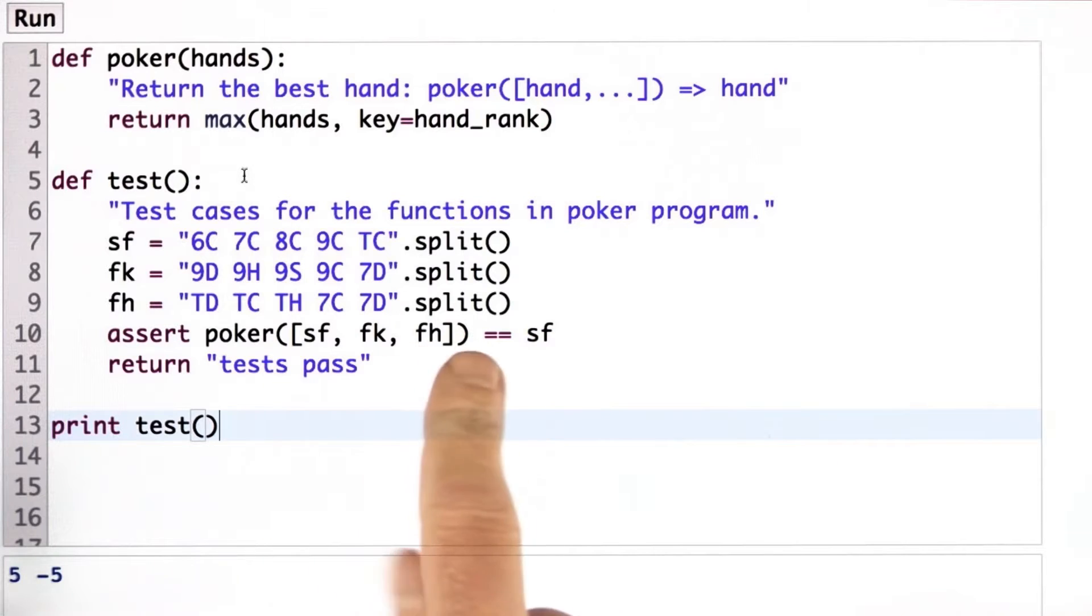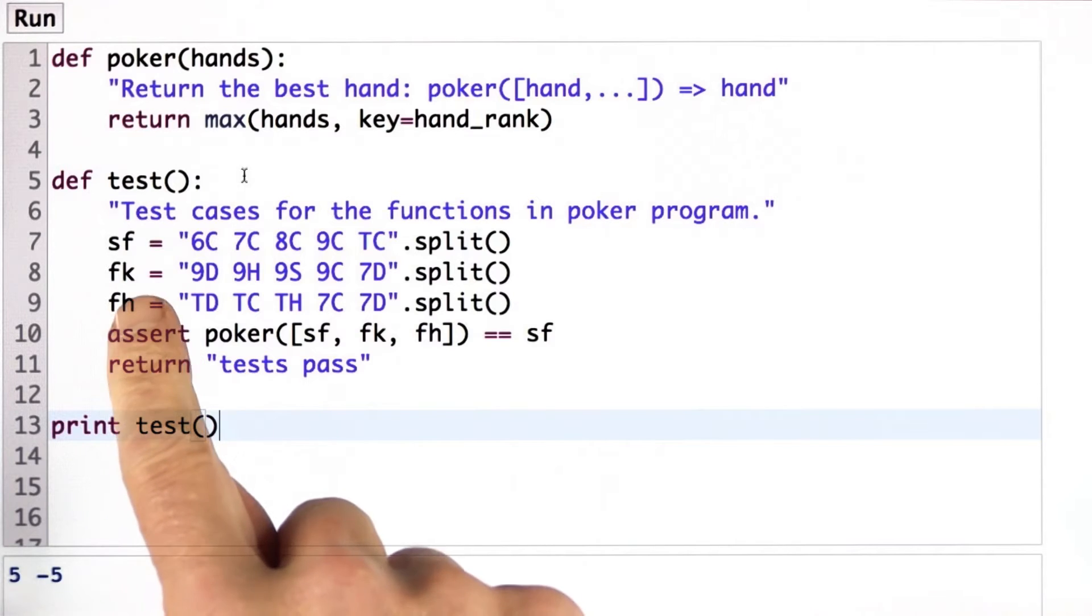So what is the one test I have here? Well, first I've defined three hands. SF stands for straight flush, FK stands for four of a kind, and FH stands for full house.